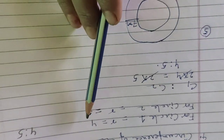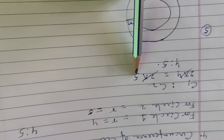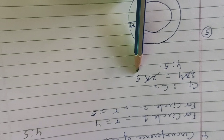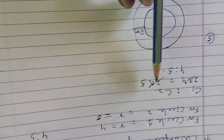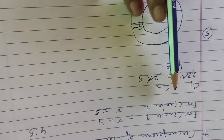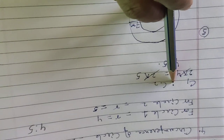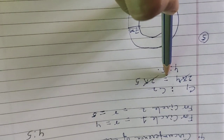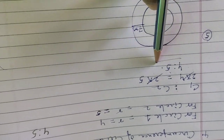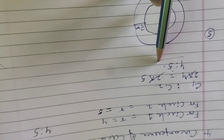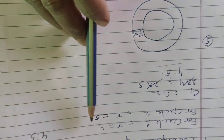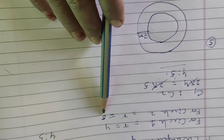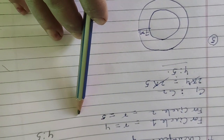Instead of r we write 4 for circle one and 5 for circle two. When we cancel this 2π and this 2π, since this ratio replaces the equal sign, you are getting the answer 4 is to 5. This shows that if the radius is in a particular ratio, the circumference will also be in that same ratio.